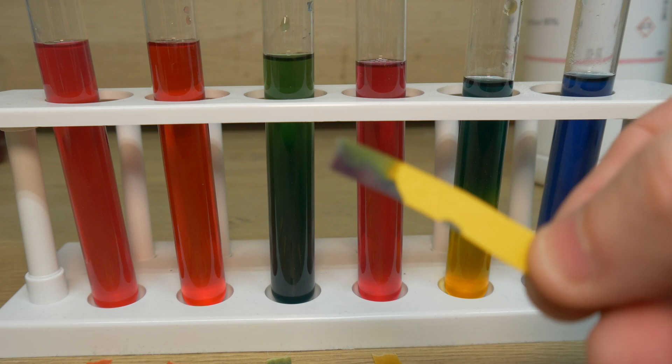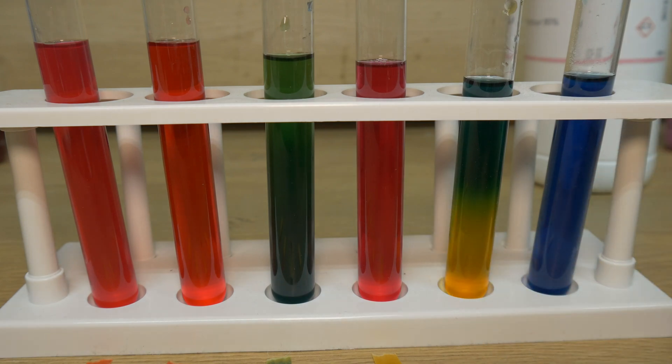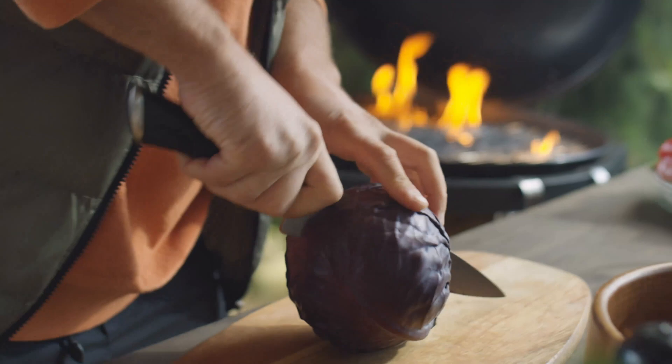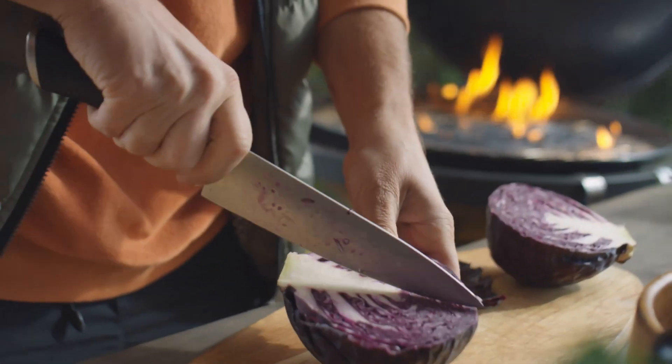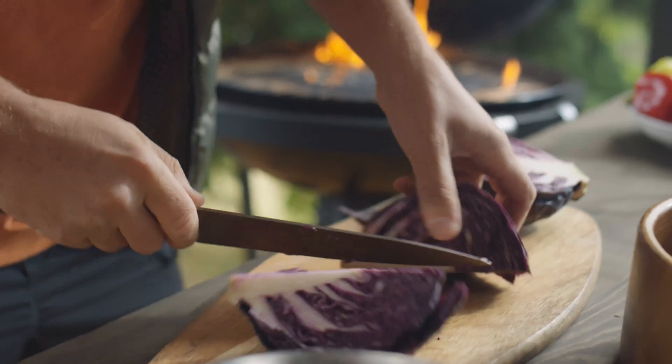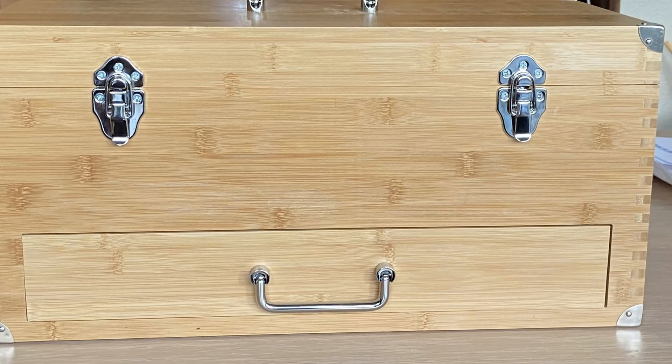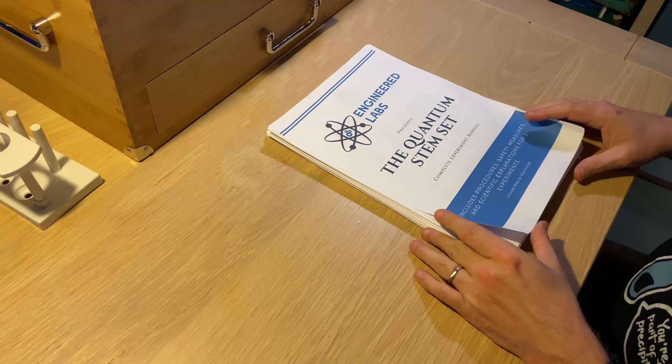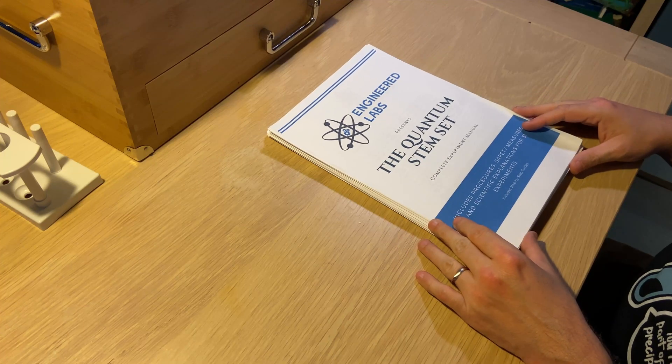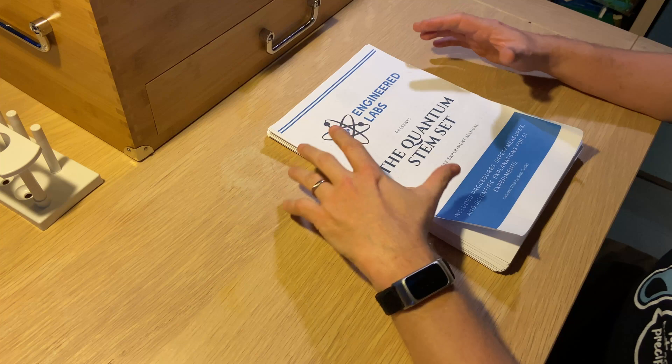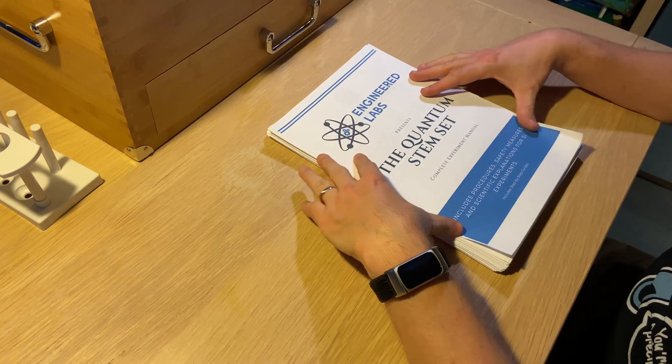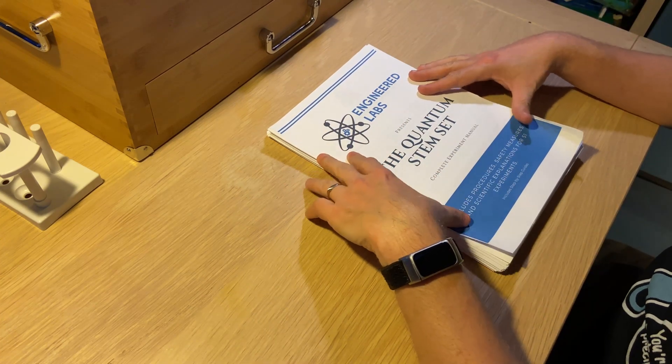So let's get started with the question. We know that pH paper is accurate in determining pH, but could red cabbage be an alternative? This is an experiment and it's cool because it can be done with household items. I got this experiment from the box I purchased a few months ago from Engineered Labs. I already did an unboxing session for this box as well. If you want one too, you can click on the link below in the description and use the code so you can get 10% off and also help this channel.